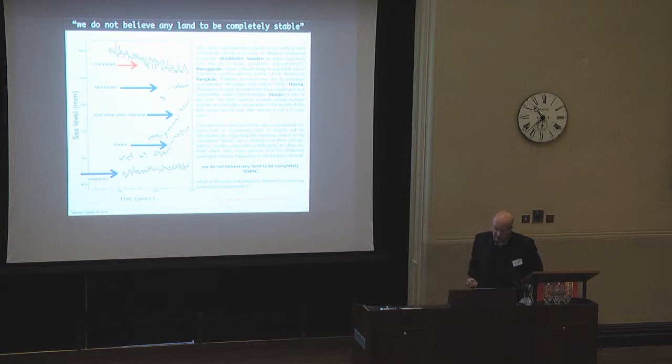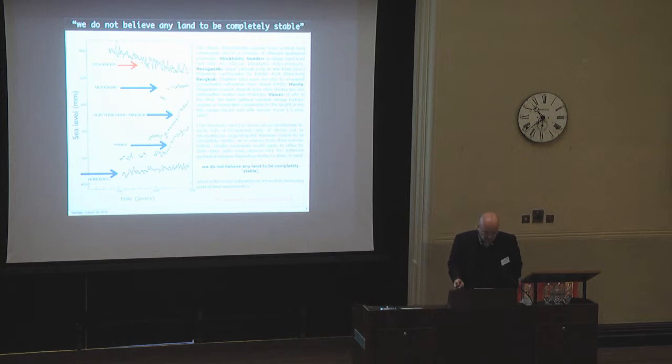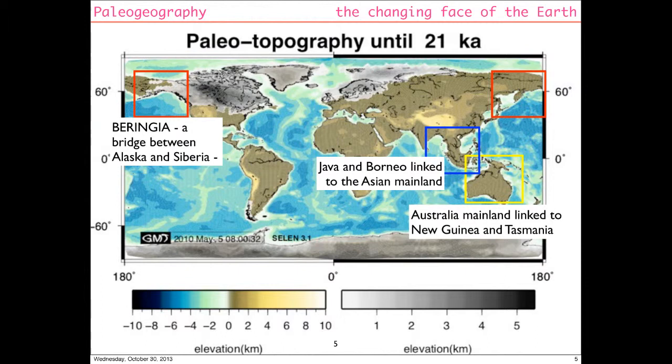The main point here is that we should make corrections to the records in order to remove as much as possible all these contaminating effects. What we can do for the moment is only to perform corrections for the GIA. We don't have available any model for performing global corrections of post-seismic deformation or global corrections for the possible effect of human activities in the same way.